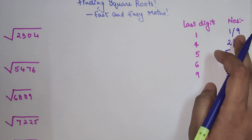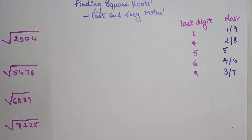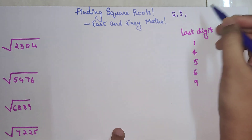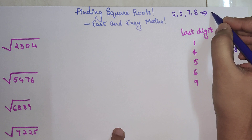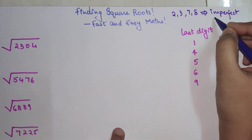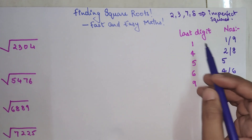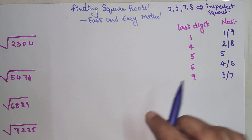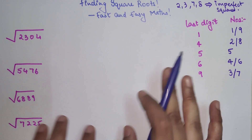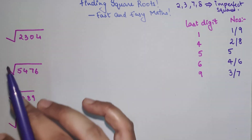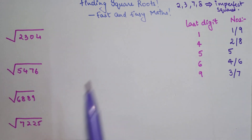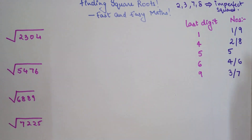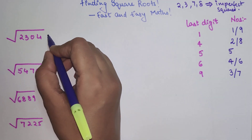So I have covered all digits from 1 to 9. Now, if the last digit of your square root ends in 2, 3, 7, or 8, then it is an imperfect square — I have already made a video on that. This video is specially dedicated to perfect squares, because in entrance exams questions almost always involve perfect squares.